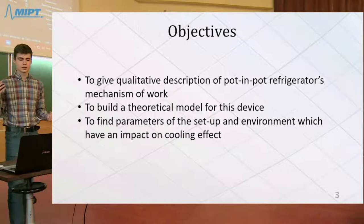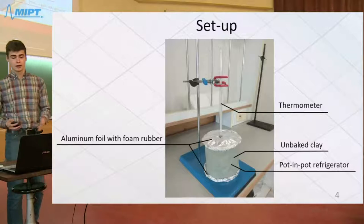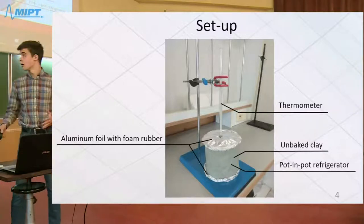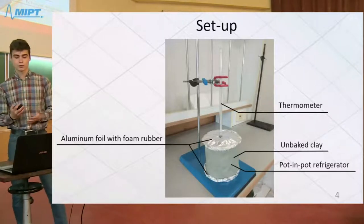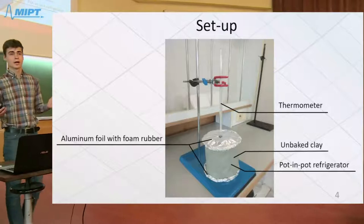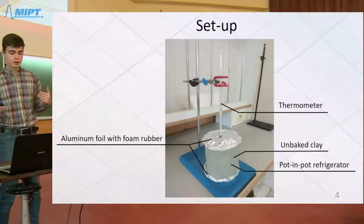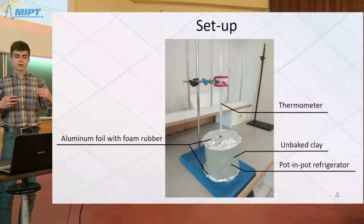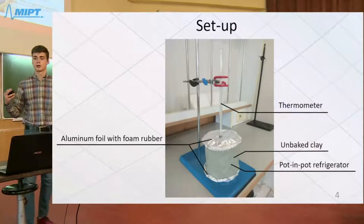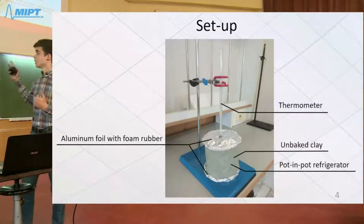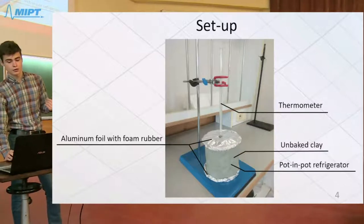On this slide you can see our setup. It consists of two pots, one inside another. These pots were made of unbaked clay because only unbaked clay allows water to evaporate through the surface of the pot. Also, the upper and lower surfaces of our system were covered by aluminum foil with foam rubber to prevent water evaporation and heat fluxes at the surface. And we have a thermometer to control the temperature in the center of our system.